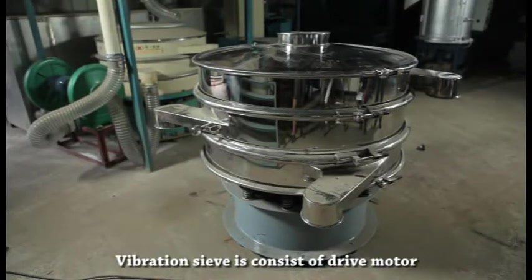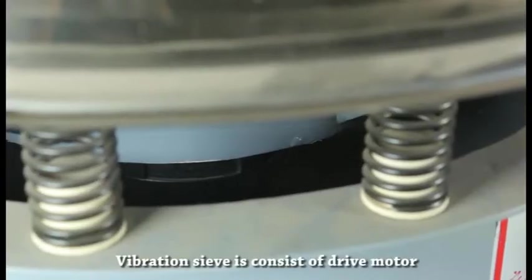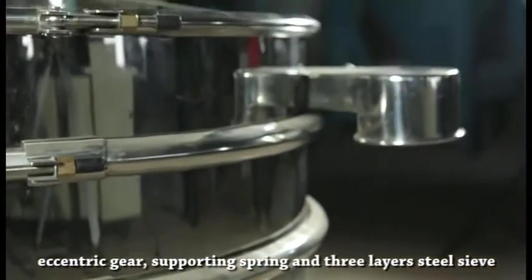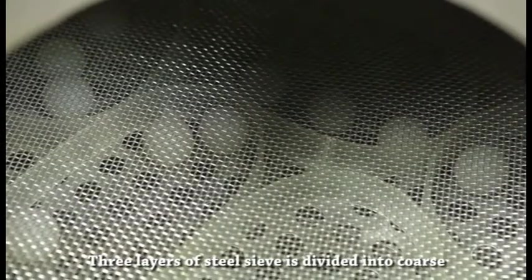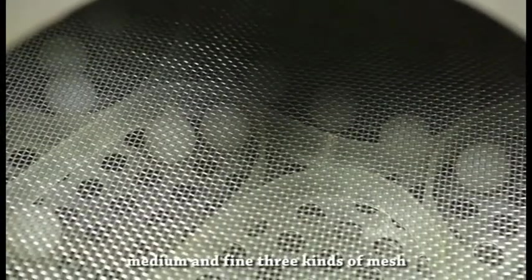The vibration sieve consists of drive motor, eccentric gear, supporting spring, and three layers of steel sieve. The three layers are divided into coarse, medium, and fine mesh.